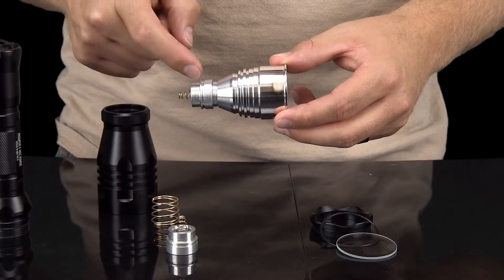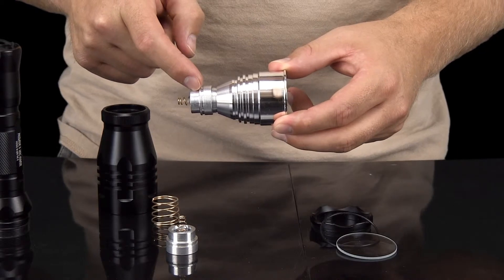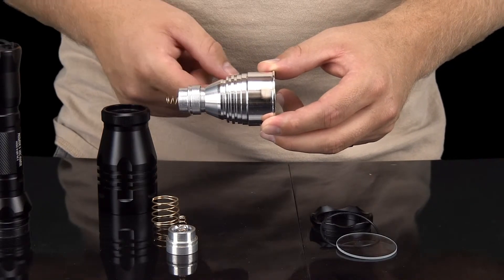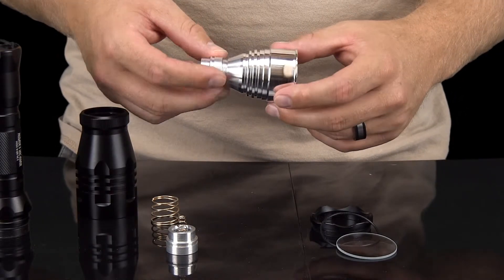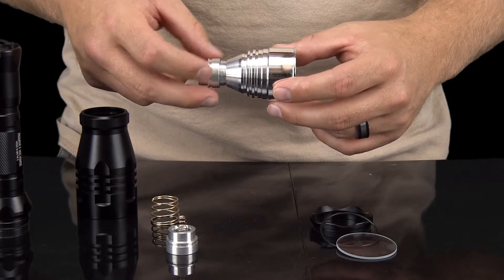Once the reflector is removed, you can easily unscrew the LED assembly from the reflective housing. Again, do not twist on the connected spring to unscrew the LED assembly.